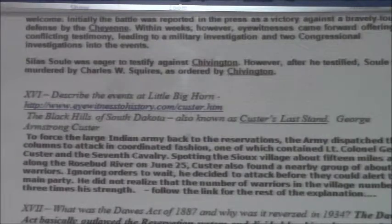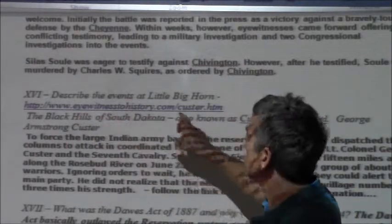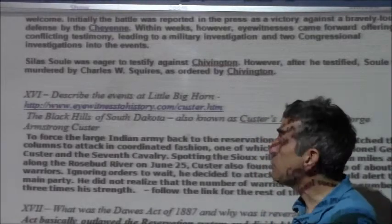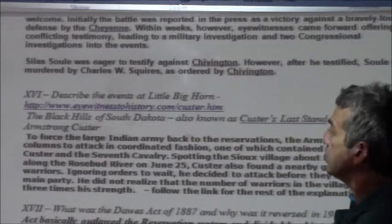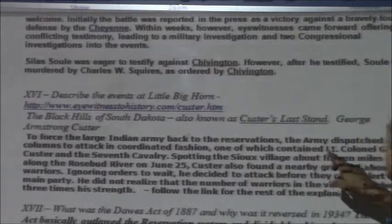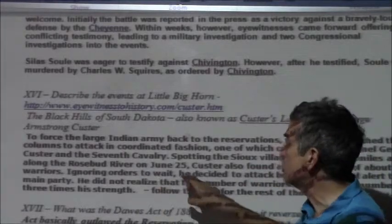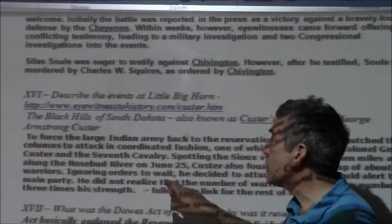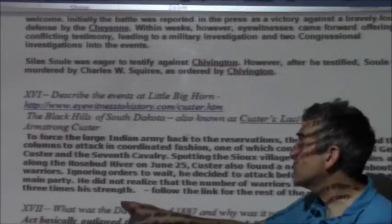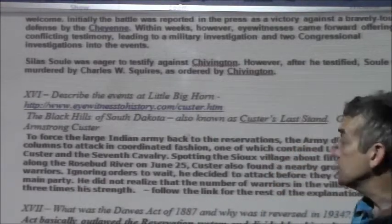Shortly thereafter in 1876, we have Little Bighorn — also known as Custer's Last Stand. I'll link to my source, Eyewitness to History. Custer was way too aggressive and paid the price. To force the large Indian army back to the reservation, the army dispatched three columns to attack in coordinated fashion, one of which contained Lieutenant Colonel George Custer and the 7th Cavalry. Spotting a Sioux village about 15 miles away along the Rosebud River on June 25th, Custer also found a nearby group of about 40 warriors. Ignoring orders to wait, he decided to attack before they could alert the main village. He did not realize the number of warriors in the village numbered three times his strength — and it was going to be a slaughter. Please read the rest at the provided link.